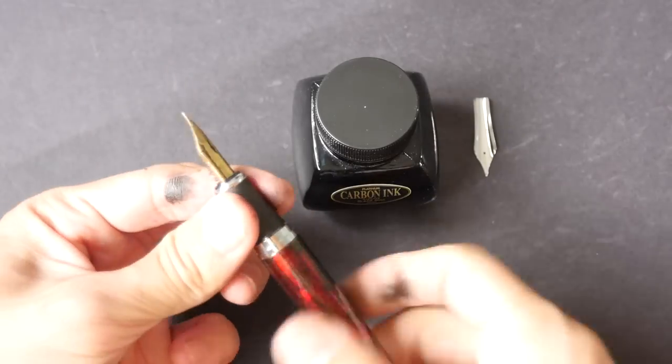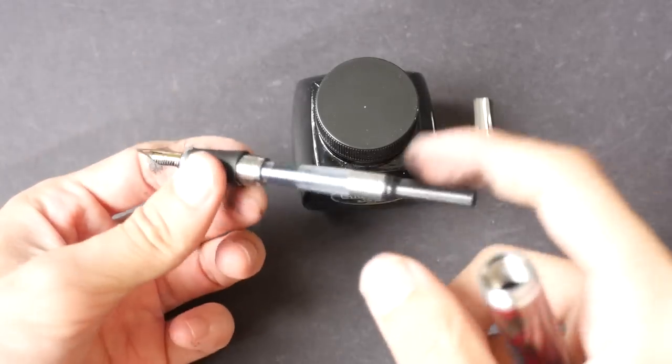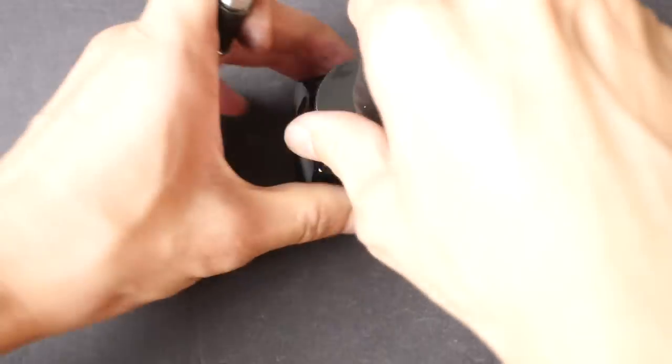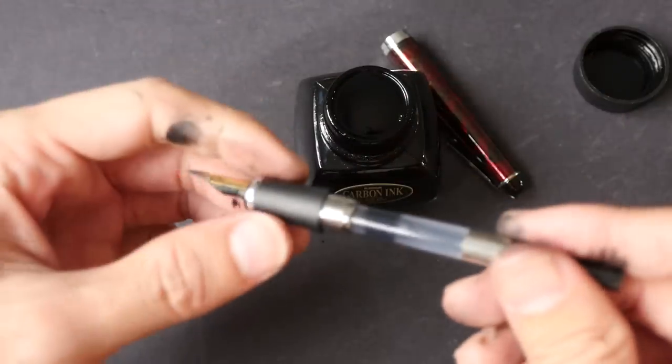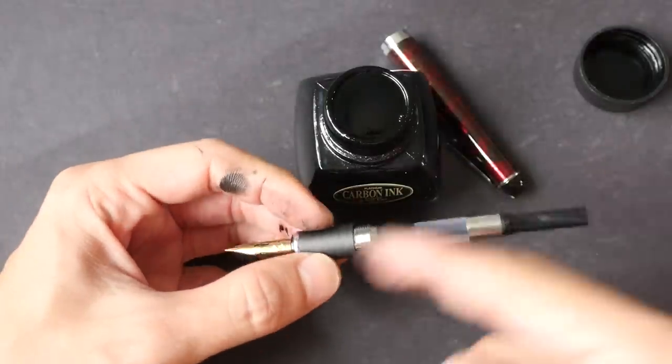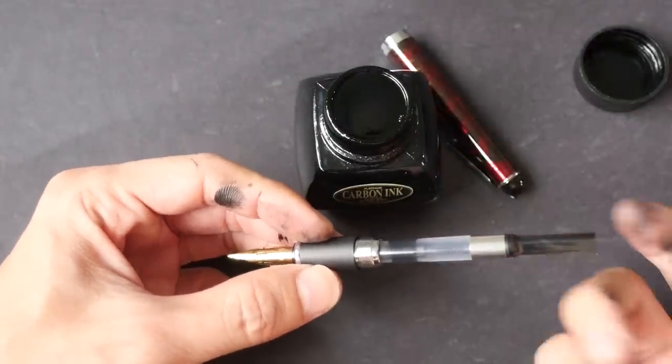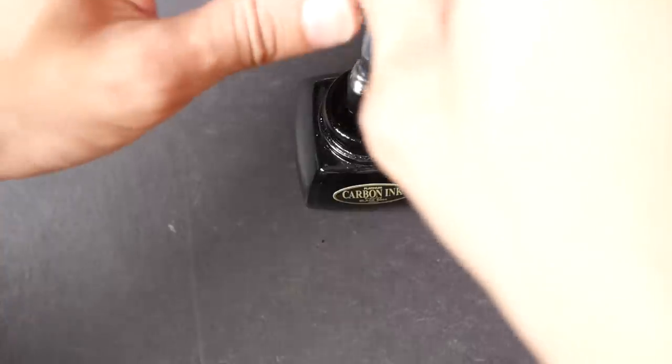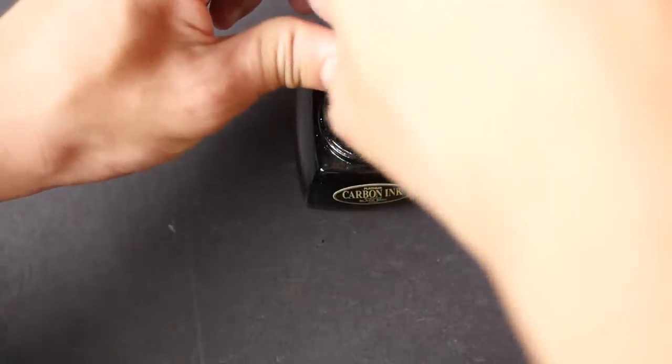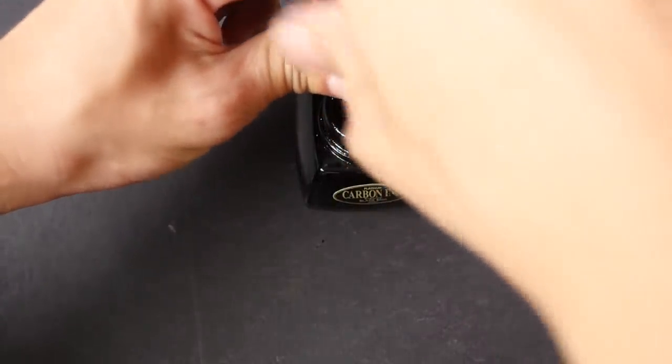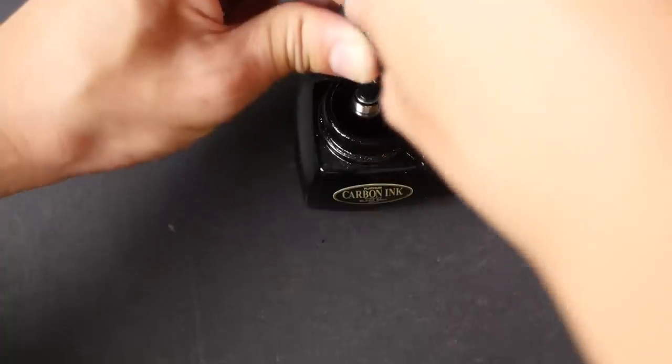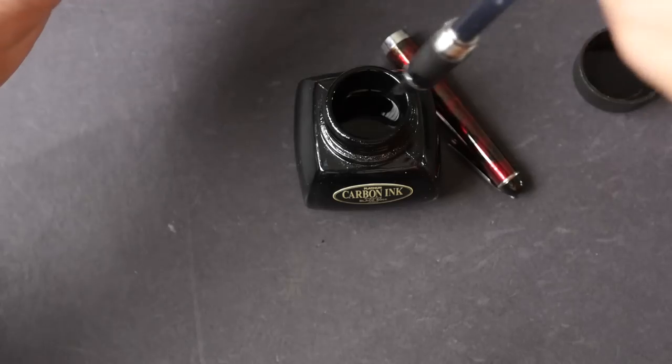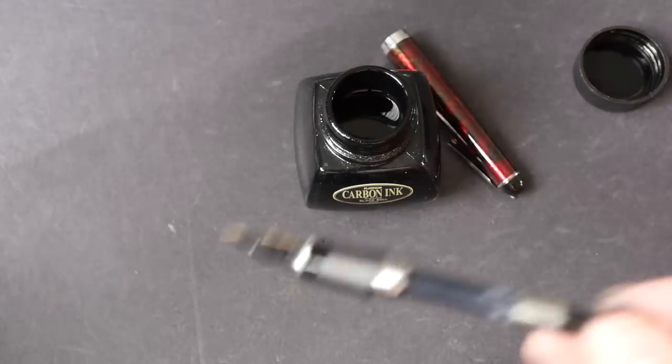Before you can use it, of course, you need to refill it. The converter comes with the pen. So I'm just going to fill it. Also, before you fix up the nib, you may want to remove the converter but I don't think it's necessary. This is a piston converter. So I'm just going to put it down. I fill it with some ink.